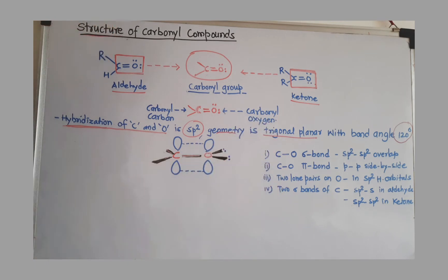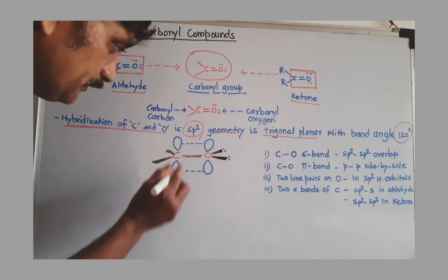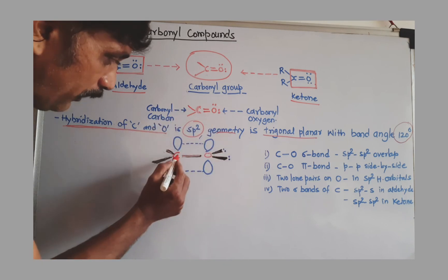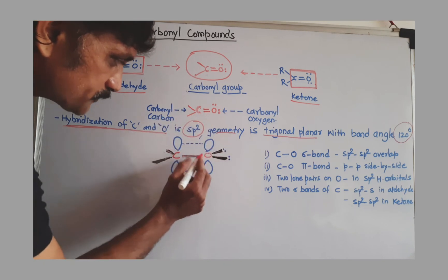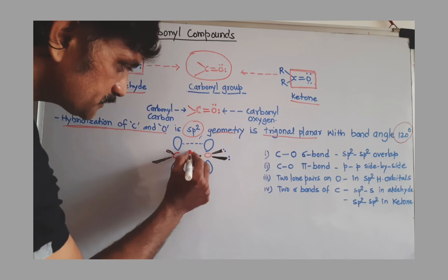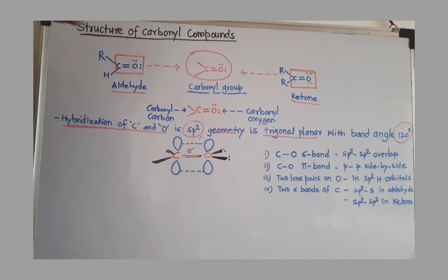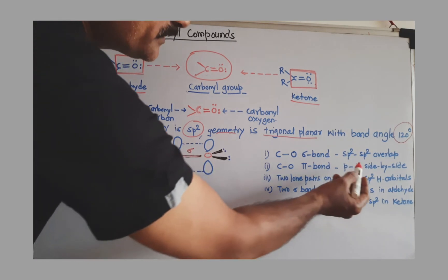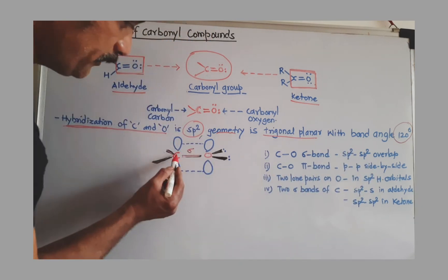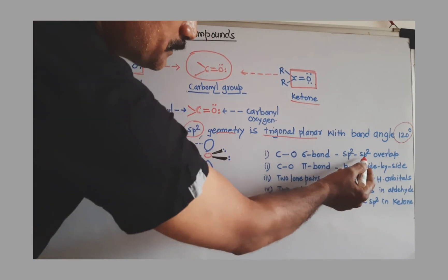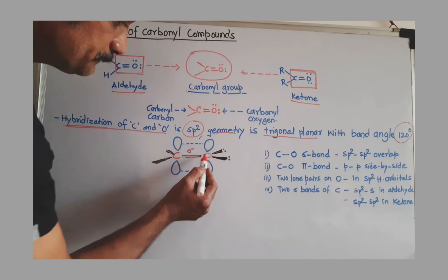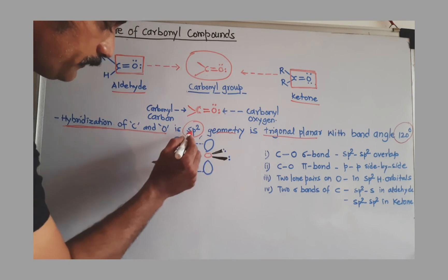Now we can discuss the bonding pattern in this carbonyl group. The bond between carbon and oxygen is a sigma bond. This sigma bond is formed after the overlapping of the sp2 hybrid orbital of carbon and the sp2 hybrid orbital of oxygen.